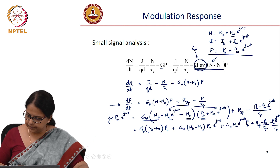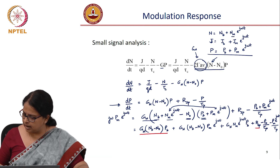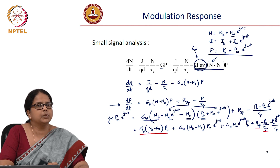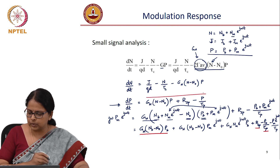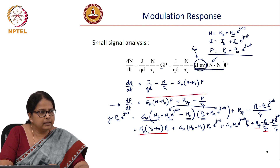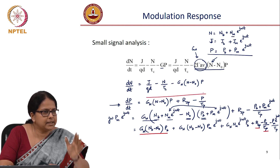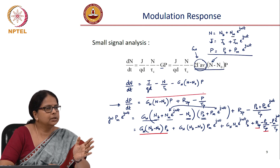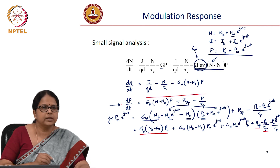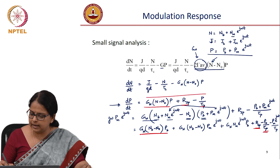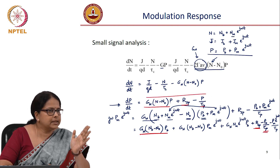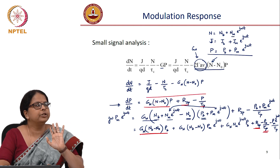Looking at the resulting expression, the DC parts — g_N·(N_B − N_0)·P_B, R_sp, and −P_B/τ_p — correspond exactly to the steady-state rate equation evaluated at the bias current. At the bias point, which is a steady-state point, these DC terms sum to zero and cancel out.